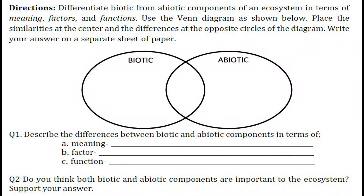For the last activity, follow these instructions. Differentiate biotic from abiotic components of an ecosystem in terms of meaning, factors, and functions. Use the Venn diagram as shown below. Place the similarities at the center and the differences at the opposite circles of the diagram. Write your answer on a separate sheet of paper. Question number 1: Describe the differences between biotic and abiotic components in terms of A) meaning, B) factor, C) function. Question number 2: Do you think both biotic and abiotic components are important to the ecosystem? Support your answer.